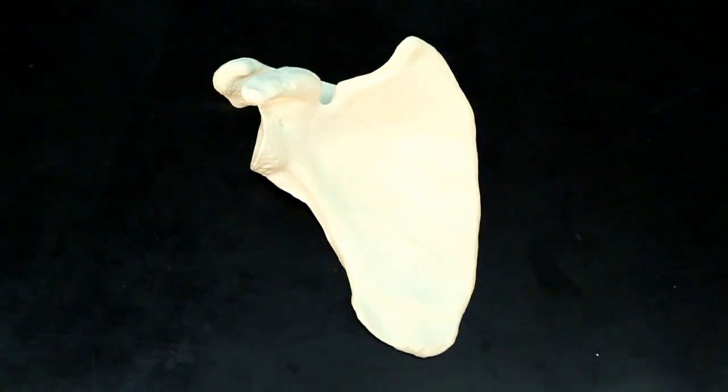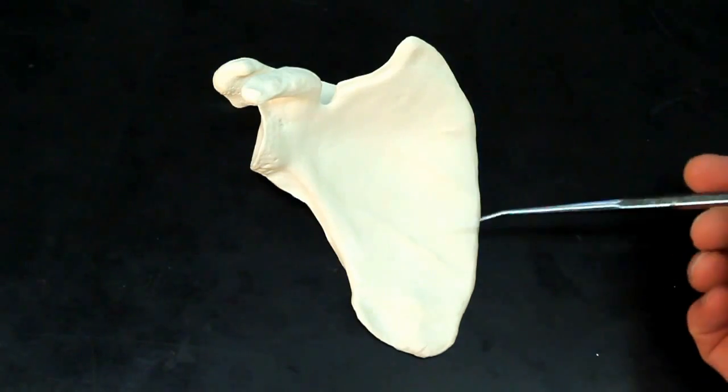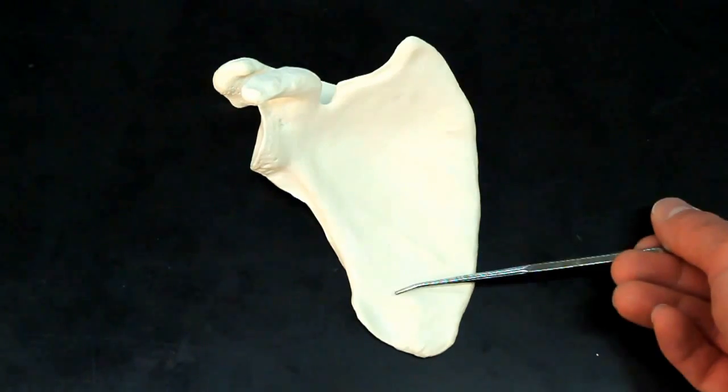This bone is the scapula. Now, the scapula, if we look at the anterior side, is pretty smooth and flat through here.